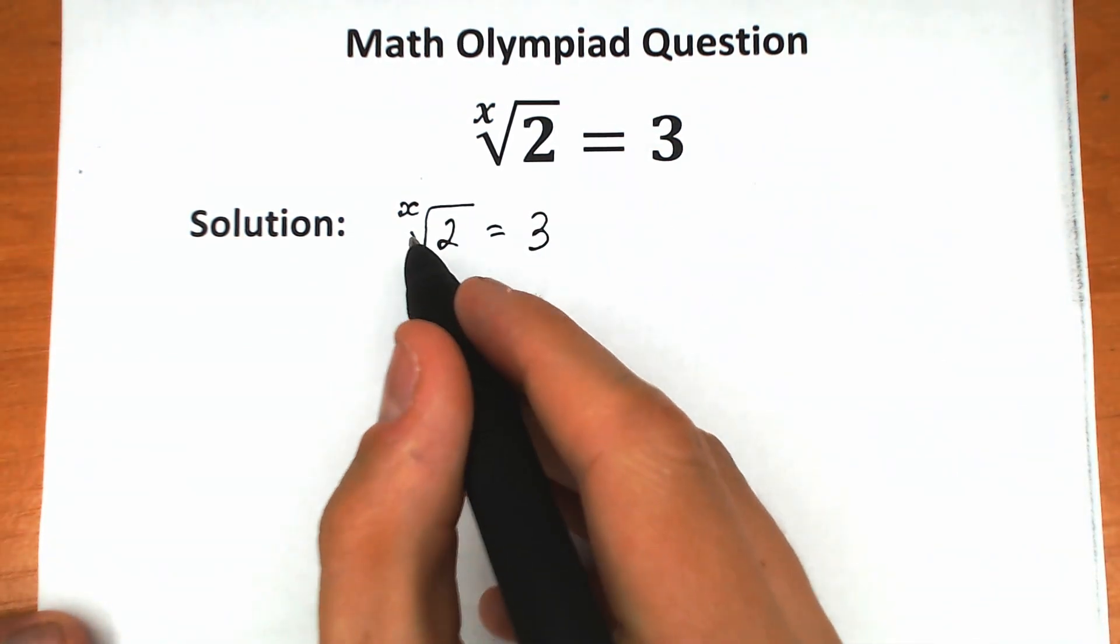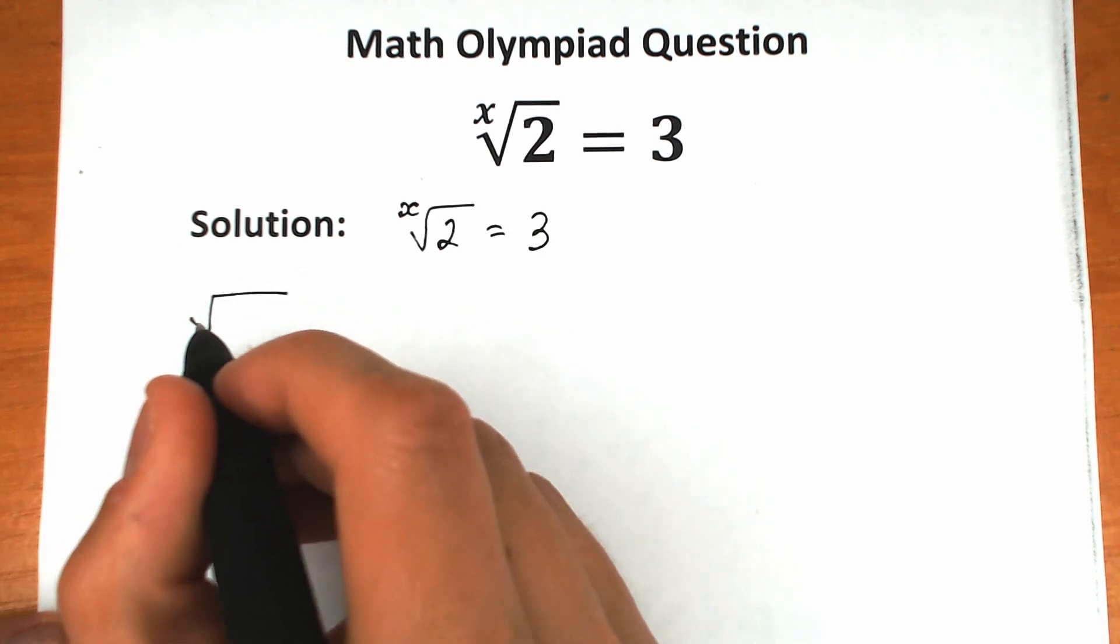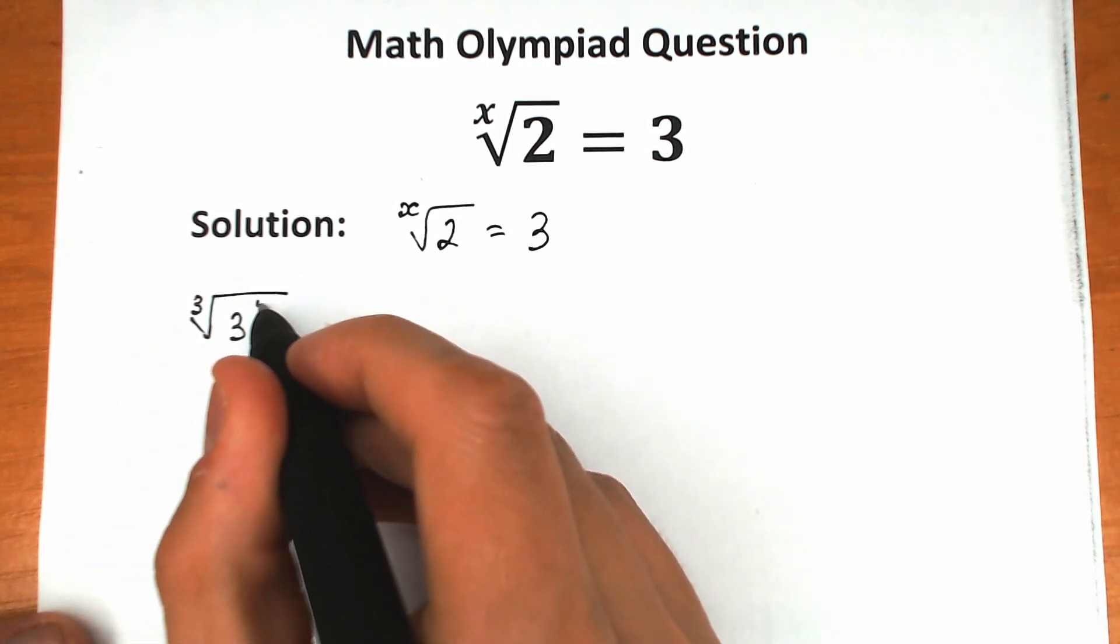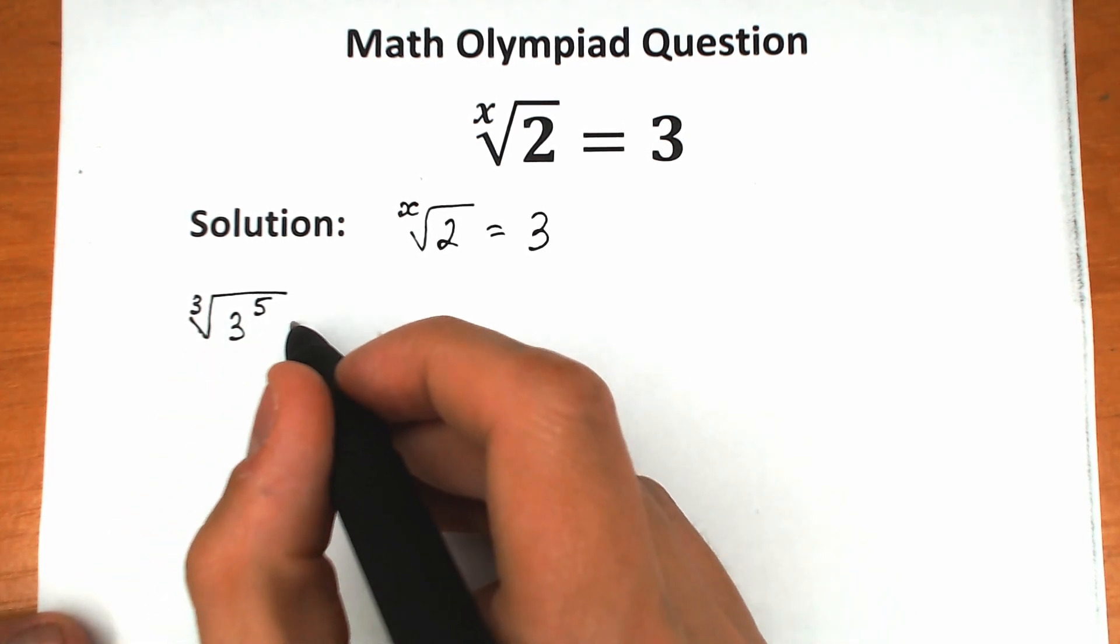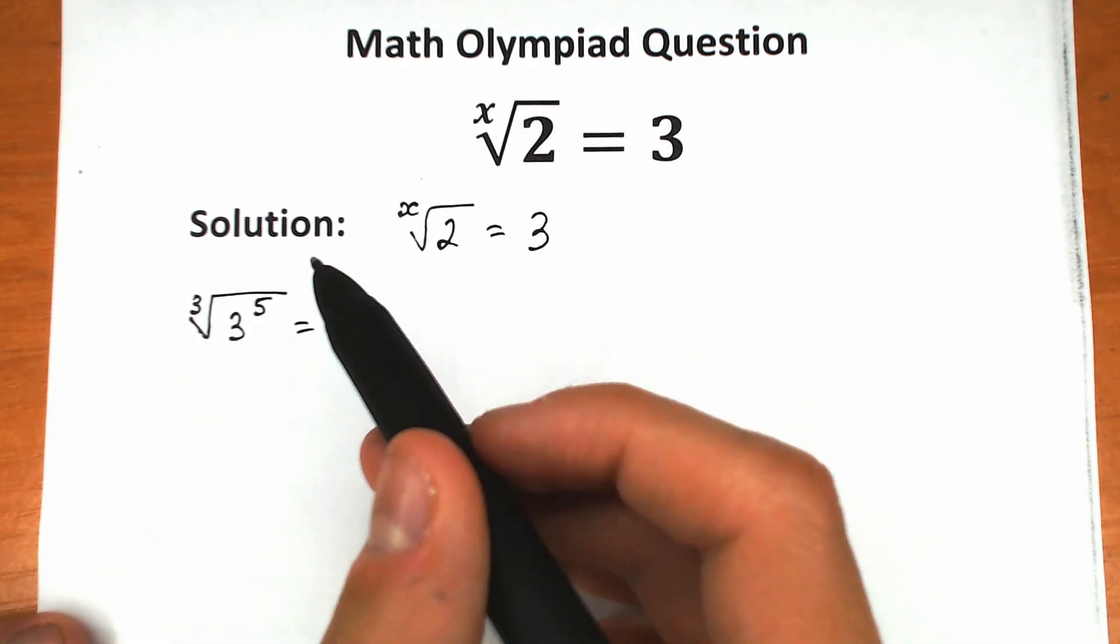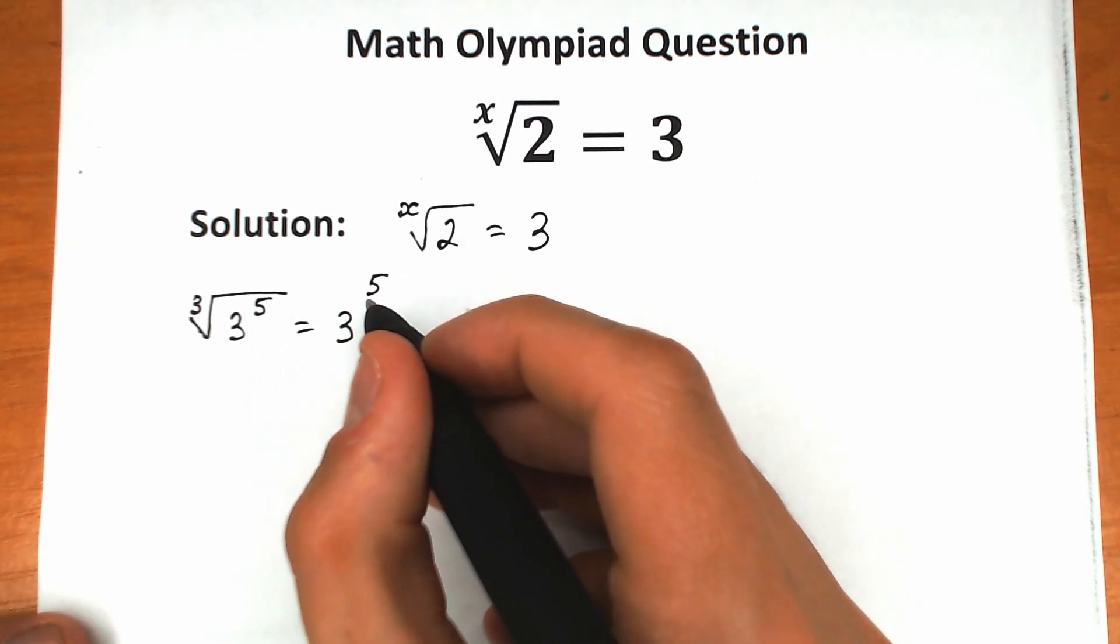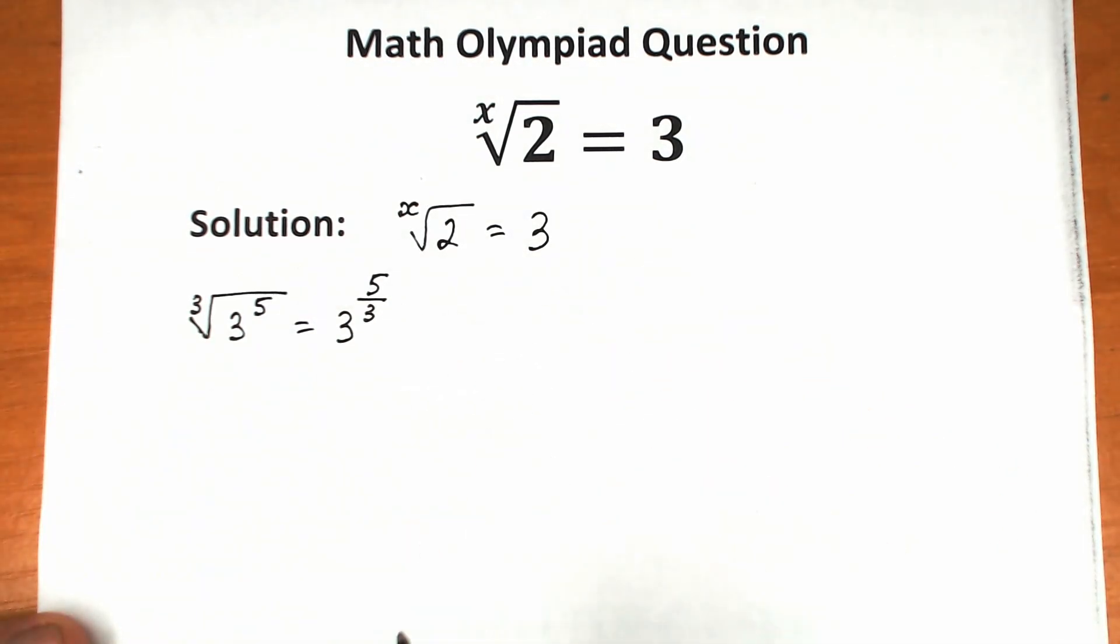But before solving the left-hand side, I want you to look at an example. Let's look at the cube root of 3 to the power of 5. How can we write this expression? We can write this as 3 to the power - the power of 3 goes to our numerator, so 5, and we divide by the power of this root, which is 3. So 3 to the power of 5 over 3.